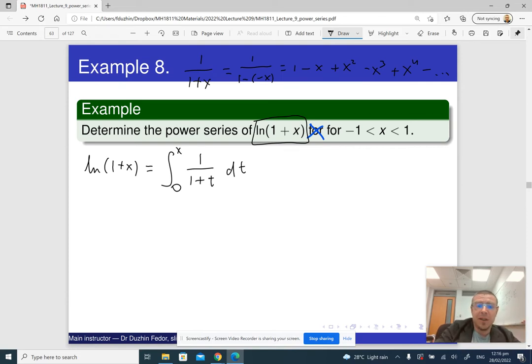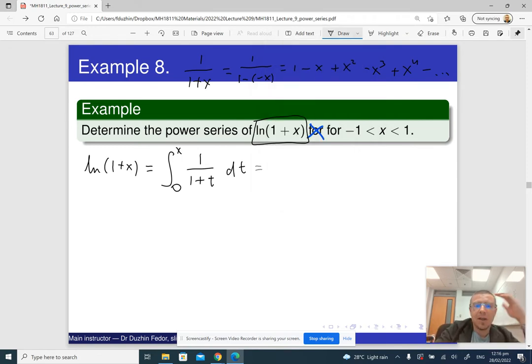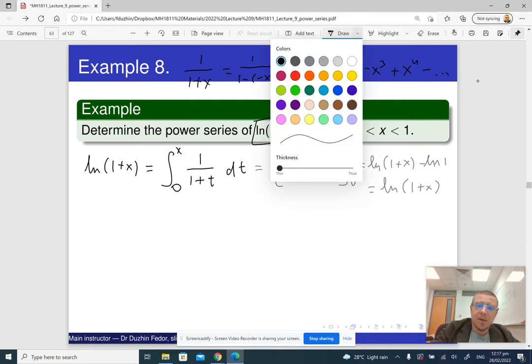By the way, you can easily verify it. If you are not sure that I'm telling you the truth, then you can verify it. If you want to integrate this, you will get ln(1+t) evaluated from 0 to x. And this is ln(1+x) minus ln(1+0), which is ln 1, and ln 1 is 0. So this is ln(1+x). So it really works.